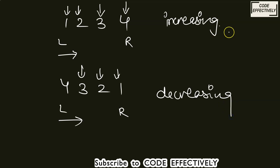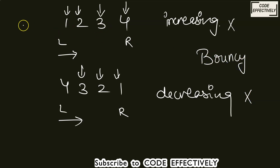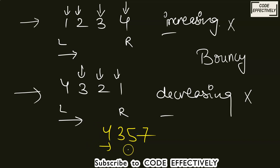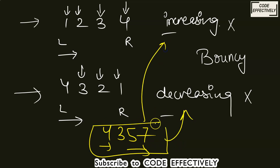So what is a bouncy number? A number which is neither increasing nor decreasing is known as a bouncy number. If the numbers are in increasing order, they are increasing. If they are in decreasing order, they are decreasing. If they are neither, it is a bouncy number. For example, 4, 3, 5, 7 could be a bouncy number — first the digits decrease, then suddenly increase, so we cannot put it in either category.